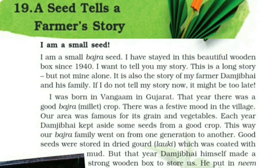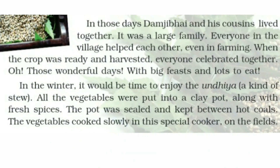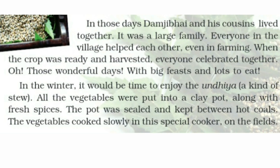'In those days, Damji Bai and his cousins lived together. It was a large family. Everyone in the village helped each other, even in farming. When the crop was ready and harvested, everyone celebrated together with big feasts and loads to eat. In winter, it would be time to enjoy the undiya. Undiya is a kind of stew. All the vegetables were put into a clay pot along with fresh spices. The pot was sealed and kept between hot coals. The vegetables cooked slowly in this special cooker on the field.'